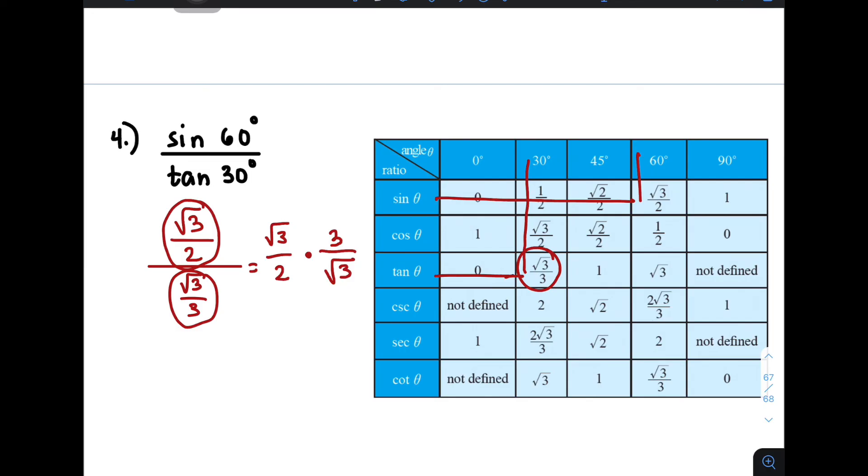And upon multiplying this, you can cancel out square root of 3 and square root of 3. And what will remain here is this and this. Therefore, the final answer is simply 3 over 2.